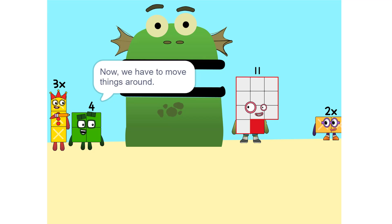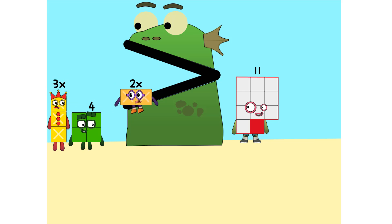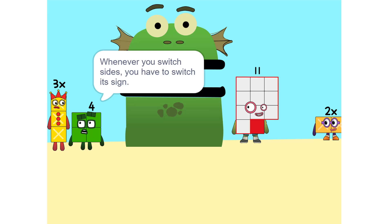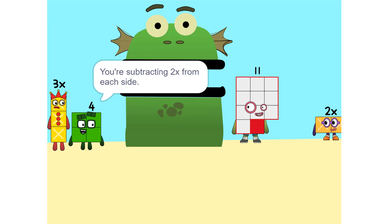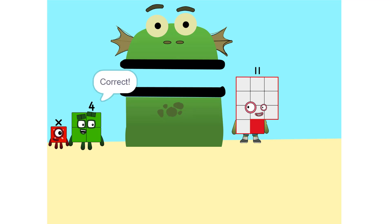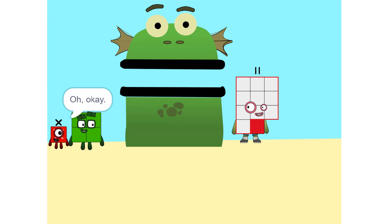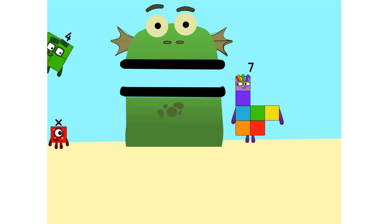Yeah. Now we have to move things around. We have to move this 2X to this side. So, 5X. Whenever you switch sides, you have to switch its sign. So if it's positive, it becomes negative and vice versa. Why? Think of it this way — you're subtracting 2X from each side. So it'd just be 1X, or X. Correct. Now do the same with the 4. 11 minus 4 is 7. So now what do I do? What's there left to do? X equals 7, so X is 7.